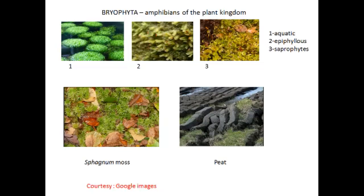Certain mosses such as Bryum, along with algae present in calcium bicarbonate-rich shallow water or lakes, form calcareous rock-like deposits around these plants. These plants decompose bicarbonate ions, resulting in the precipitation of insoluble calcium carbonate. This mineral deposit continues to grow and extends over several hundred square feet of area.